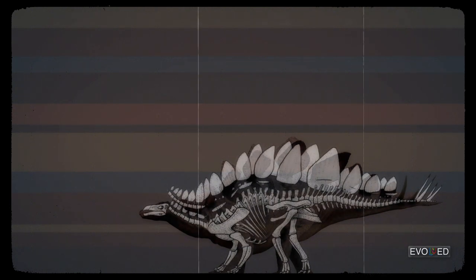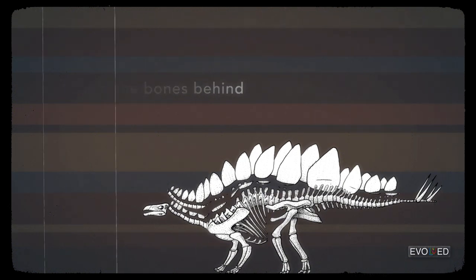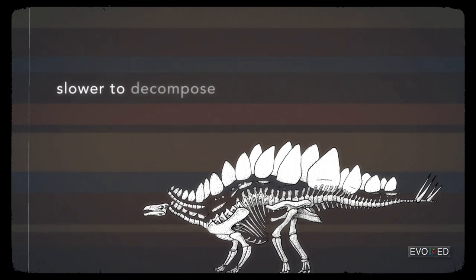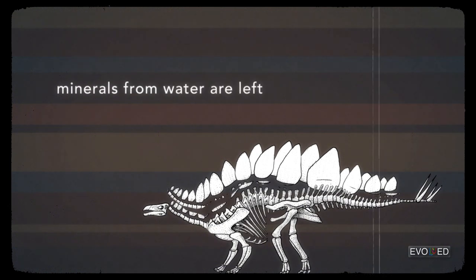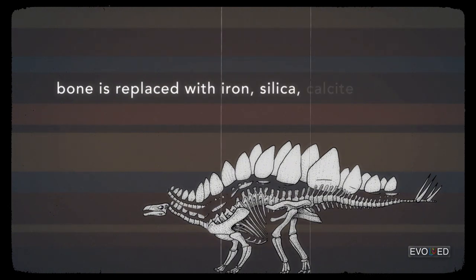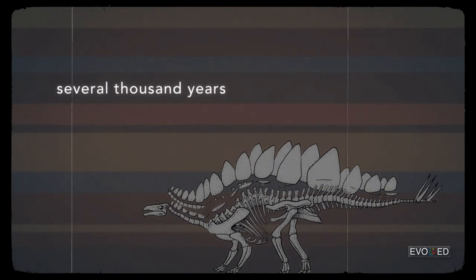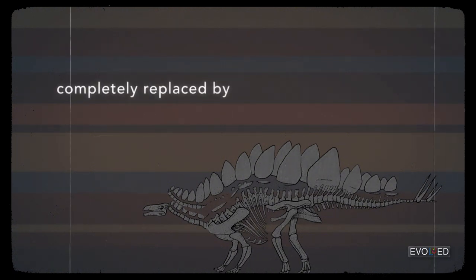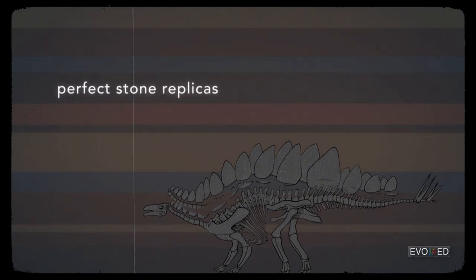First, the fleshy parts of whatever died can rot away and decompose rather quickly, leaving the bones behind or the shell bits or the exoskeleton or the wood, depending on what died. These harder materials are much slower to decompose. But as they do, little bit by little bit, water seeps into the little spaces that are left behind. And what gets left behind then are whatever minerals were in that water. So the bone very slowly gets replaced with minerals like iron and silica and calcite. As this process occurs over the span of several thousand years, the bones of the animal or the parts of the plant become completely replaced by minerals and those minerals turn to stone, making perfect stone replicas of the remains of whatever died.